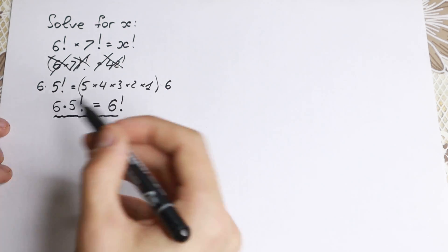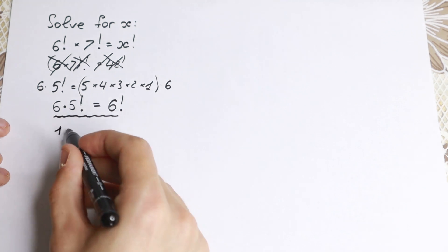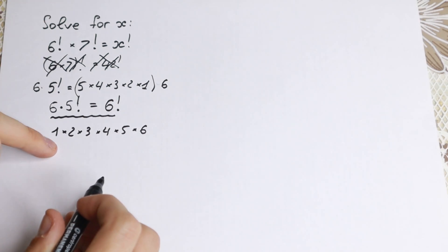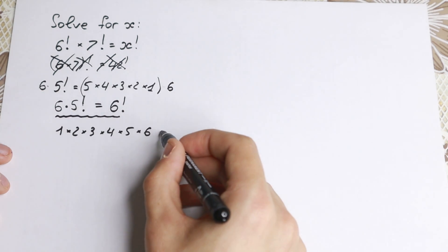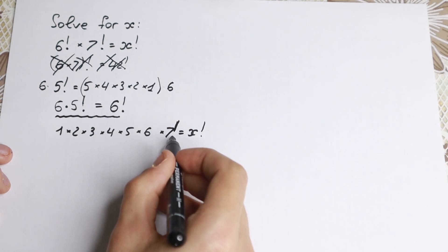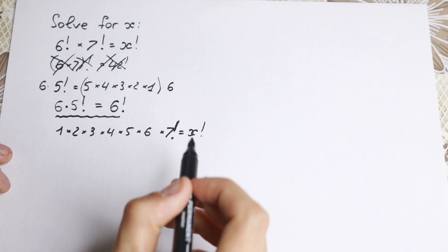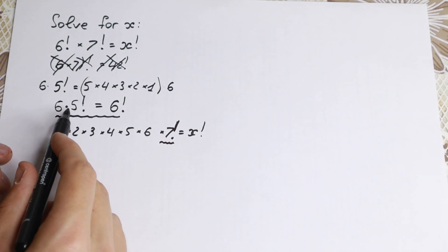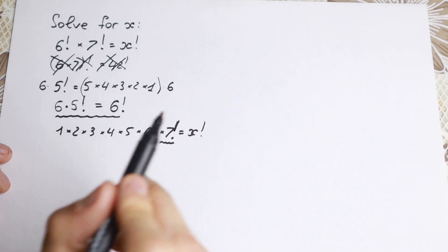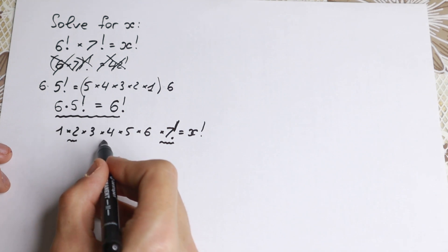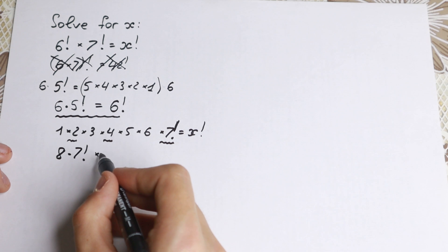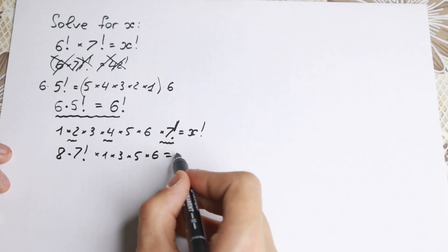Now let's apply this to our problem. I'll write 6 factorial as the product 1 times 2 times 3 times 4 times 5 times 6, and multiply it by 7 factorial. Next, I want to pair up numbers: 2 times 4 equals 8, so I write 8 times 7 factorial, and the rest of the product becomes 1 times 3 times 5 times 6, giving us 8 times 7 factorial times 1 times 3 times 5 times 6 equals x factorial.